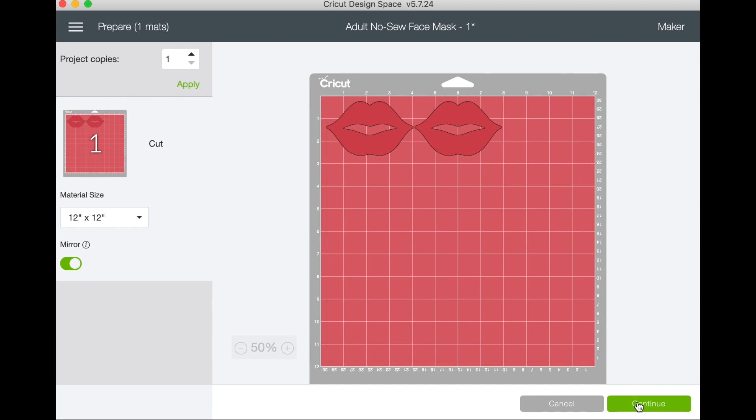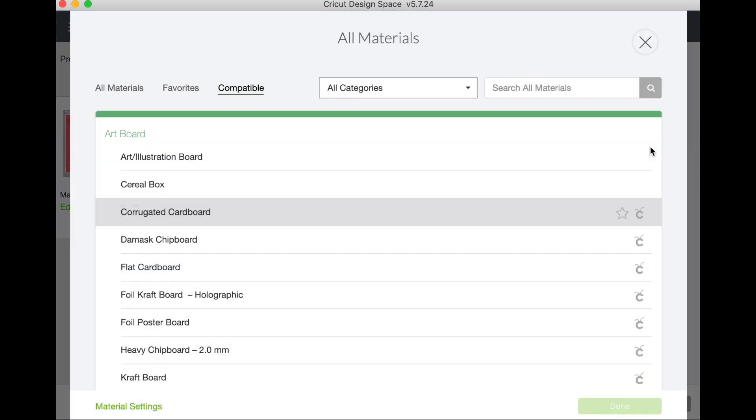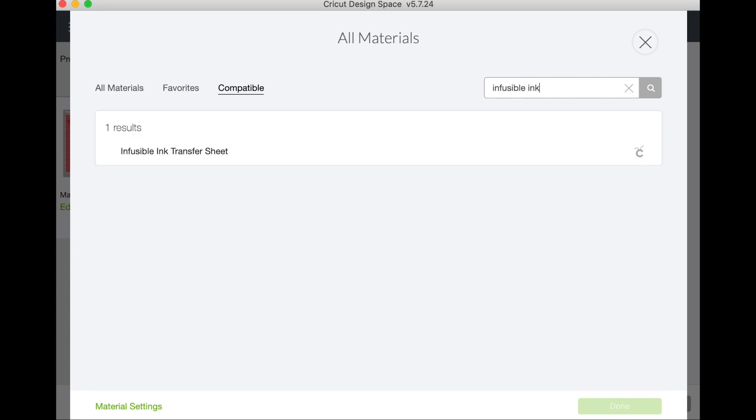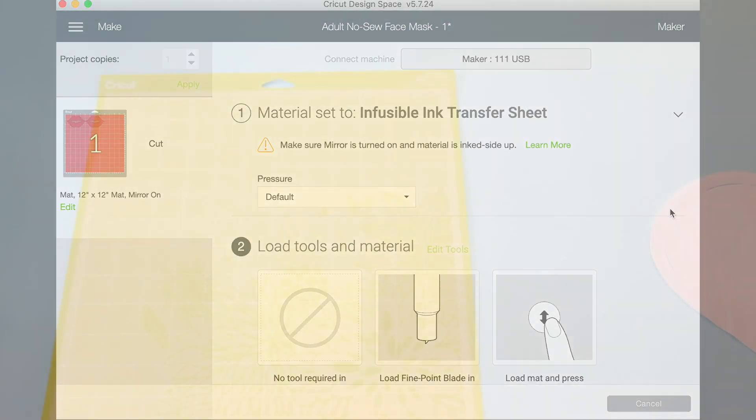Okay and continue so our Maker is already connected now we just have to select our materials and I want infusible ink and we just want to use infusible ink transfer sheet. I'll star that so it shows up with my favorites next time. Now make sure that you switch your blades back from the rotary blade to the fine point blade. Okay so let's hop back to the craft table and we'll put our infusible ink transfer sheet on our mat.